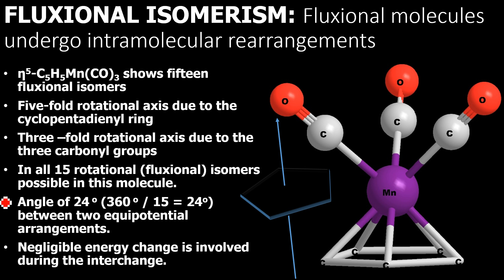The first type of isomerism that we are going to discuss today is fluxional isomerism. Fluxional molecules are the molecules that are capable of undergoing intramolecular rearrangements.